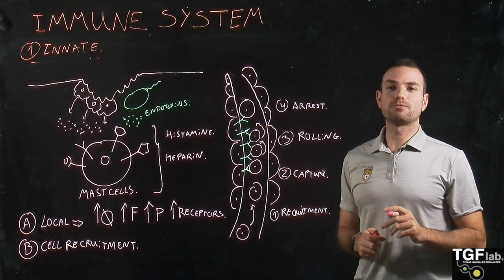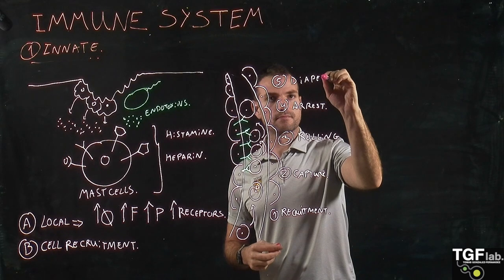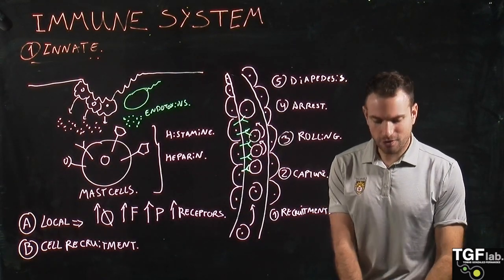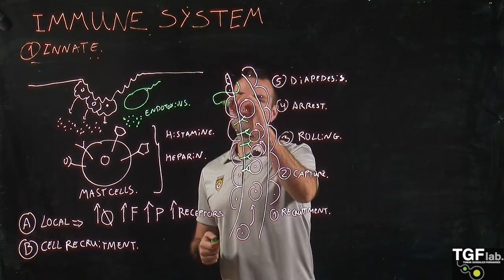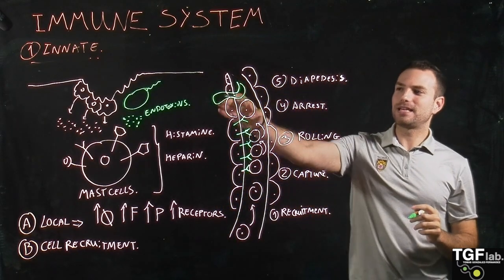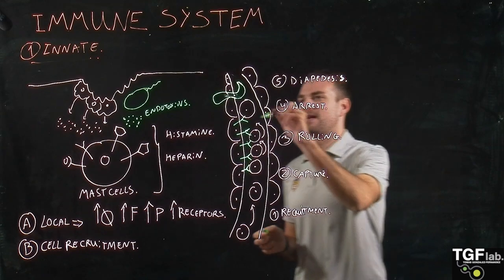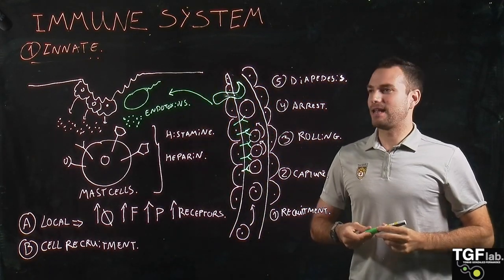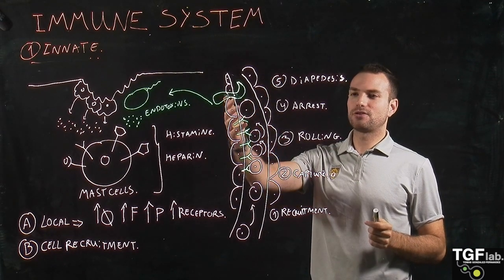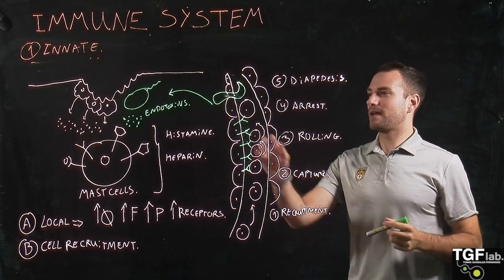When they are arrested, they start the final process, which is diapedesis. In this process, the neutrophils elongate and extravasate — they cross the endothelium wall, stretching and becoming very thin, going through the walls of the endothelium into the area of infection and the wound area. So the neutrophils are recruited, then captured, they roll along the endothelium walls until they arrest, and then undergo diapedesis to reach the site of action.